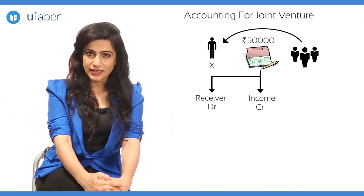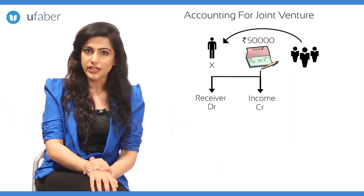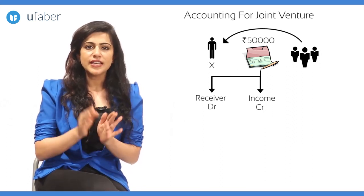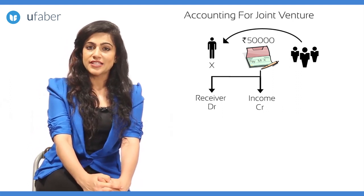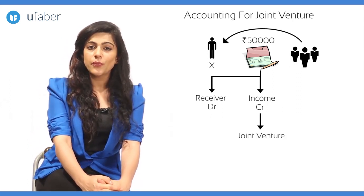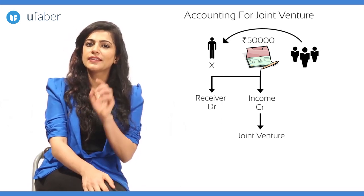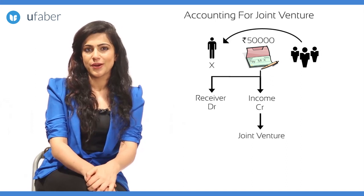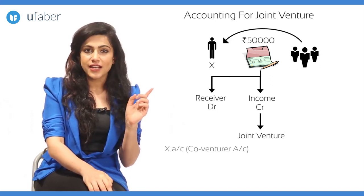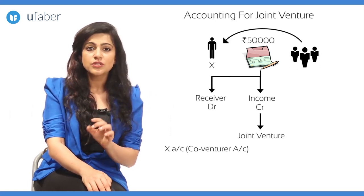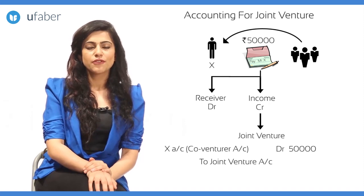Similar to the previous journal entry, since the sales account is generally transferred to the profit and loss account, and in the case of a joint venture the joint venture account acts as profit and loss account, we credit the amount to joint venture account. So the journal entry is: X account (co-venturer account) debit 50,000, to joint venture account 50,000.